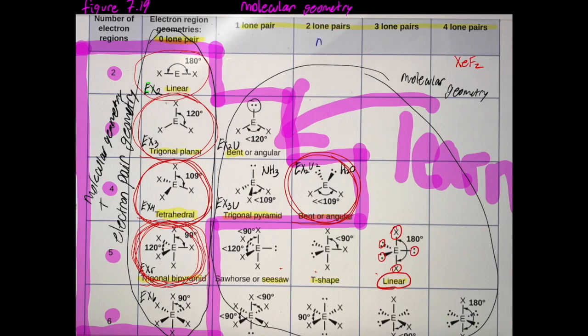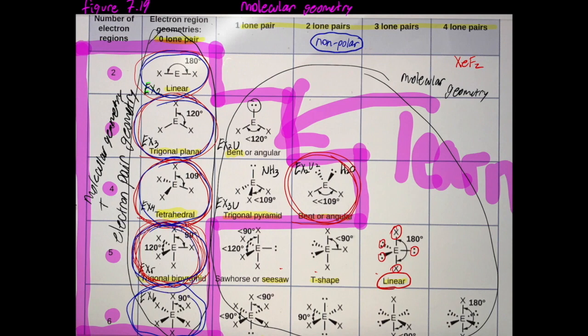Let's make a note, nonpolar, and let's circle that label. Now, this is going to be nonpolar, this is going to be nonpolar. Whenever you have a molecule without lone pairs on the central atom, it's going to be nonpolar. That's an easy way to remember it.